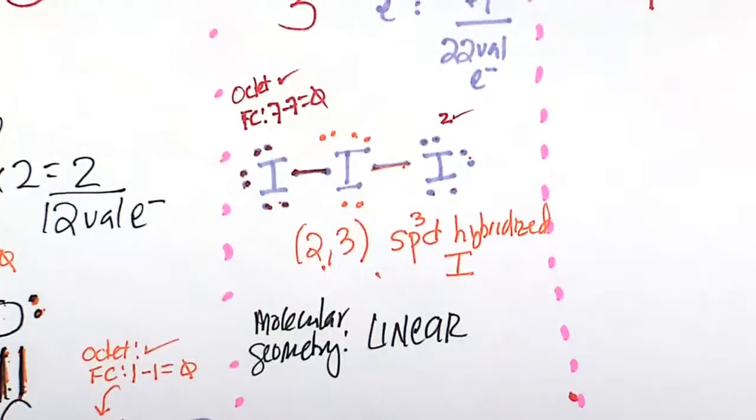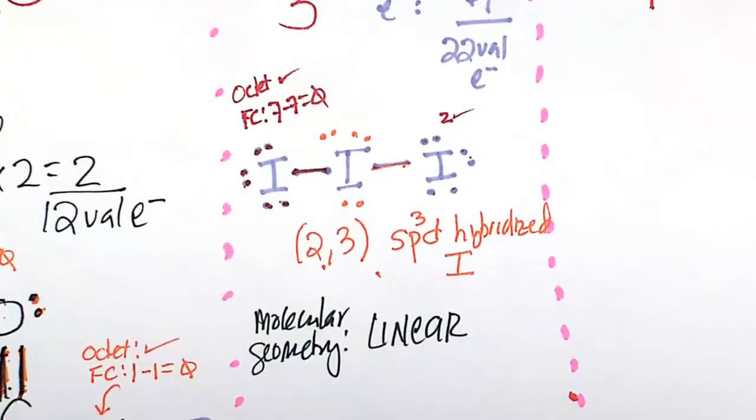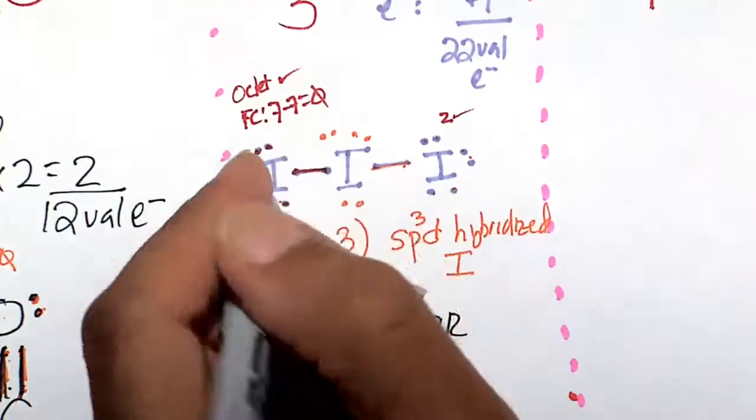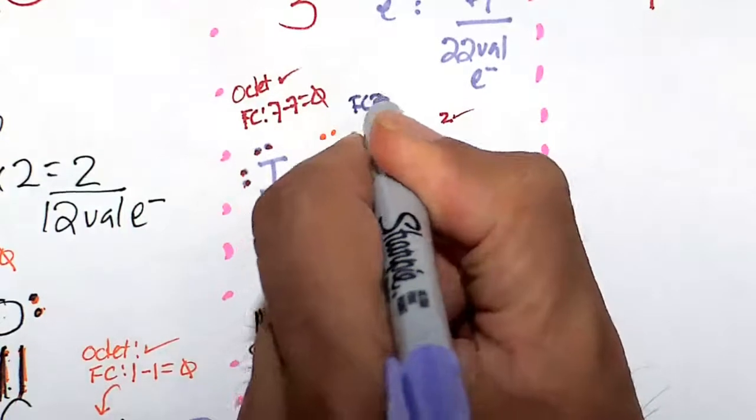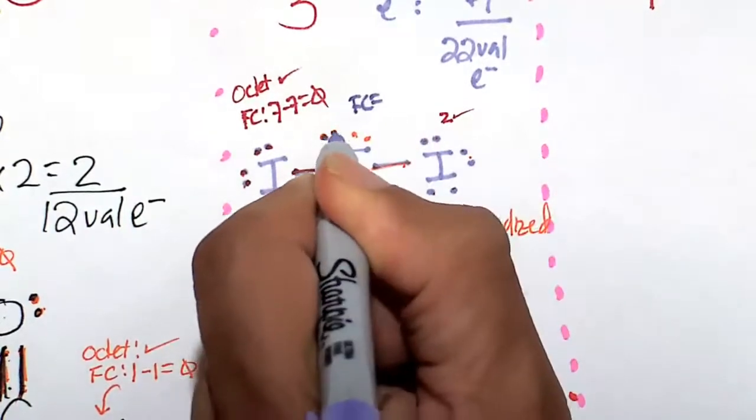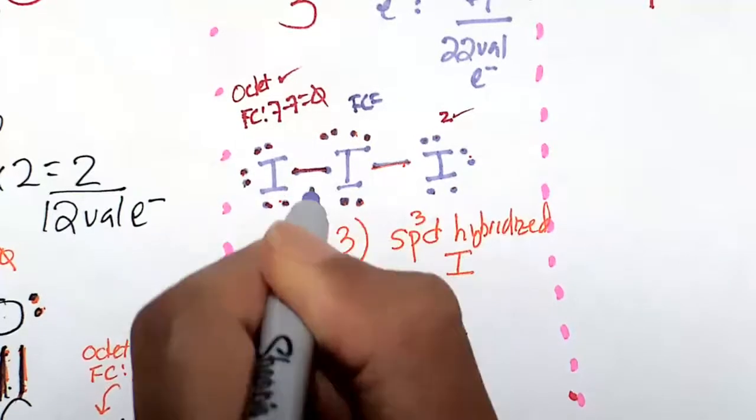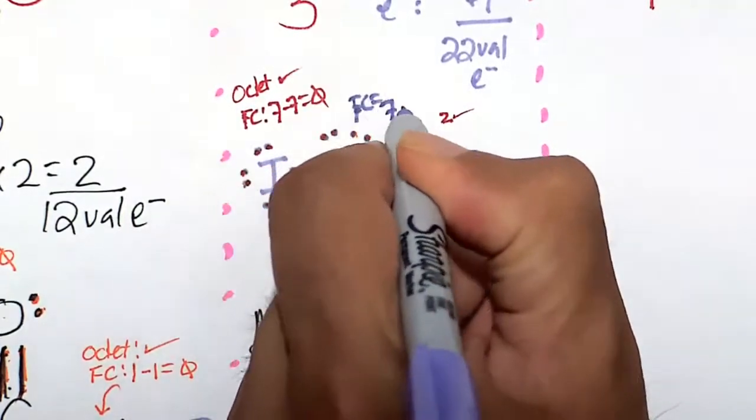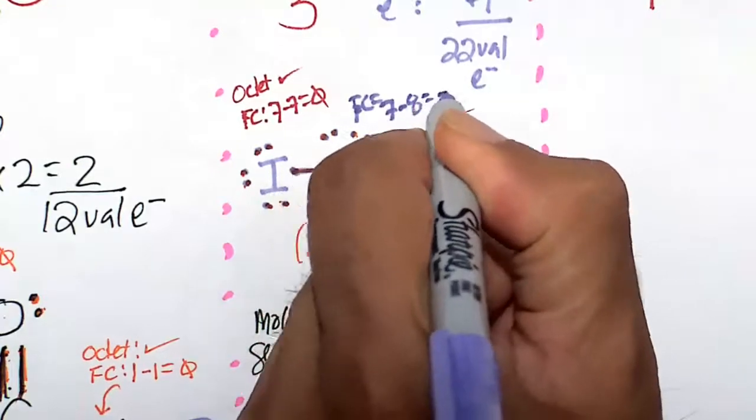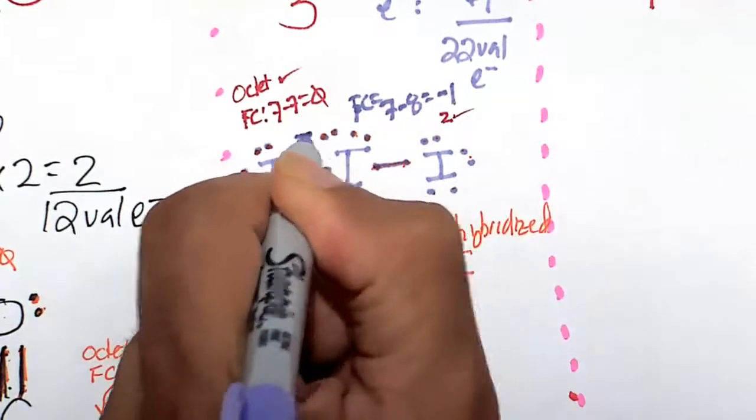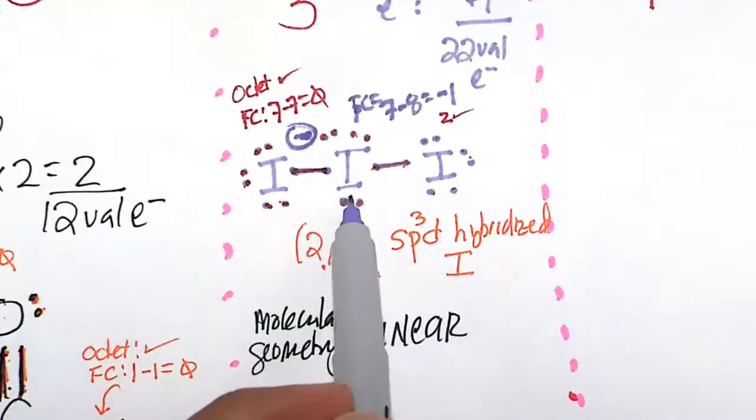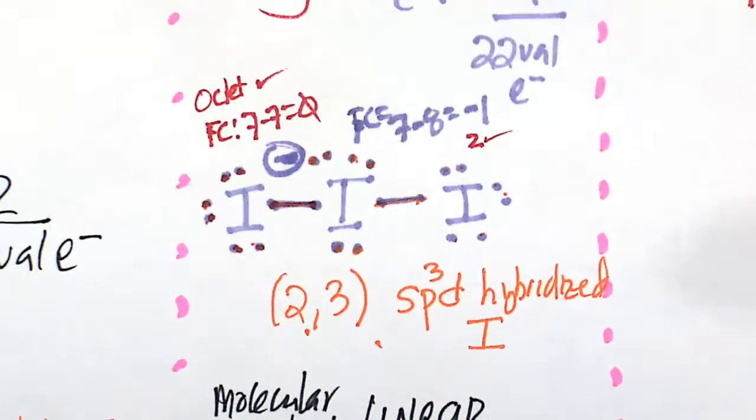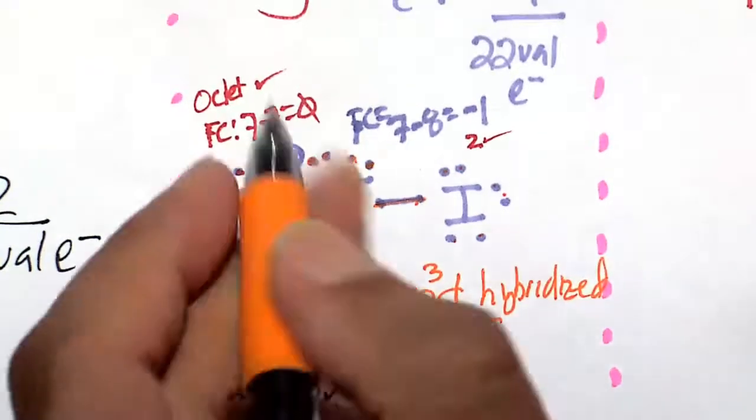Let's look at the formal charge and octet rule considerations for the center iodine. For that situation, we'll use this purple one. All right, so the formal charge is most important. So 1, 2, 3, 4, 5, 6, 7, 8. Okay, iodine is happy at seven. Seven minus eight is minus one. So that minus formal charge goes into the center atom. Okay, so let's do that again just in case there's any confusion on this matter.